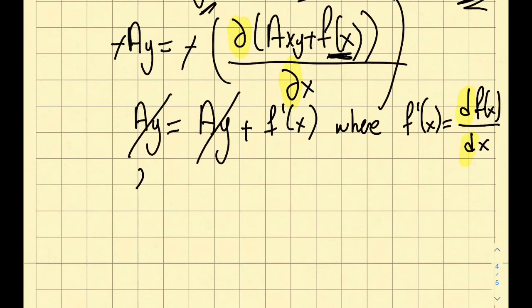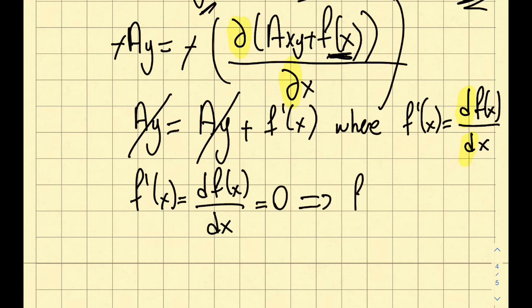So then these two cancel. I get myself, F of X is equal to dFX/dX is equal to 0. So from here, what kind of function satisfies this relationship? The derivative of that is 0. Well, that's actually this, a constant.